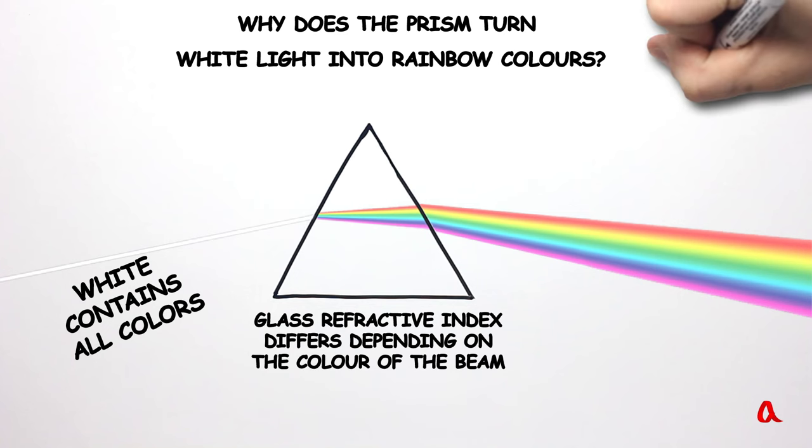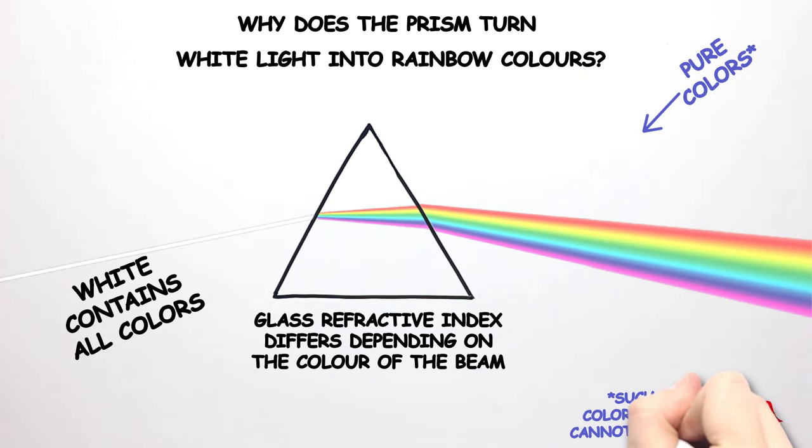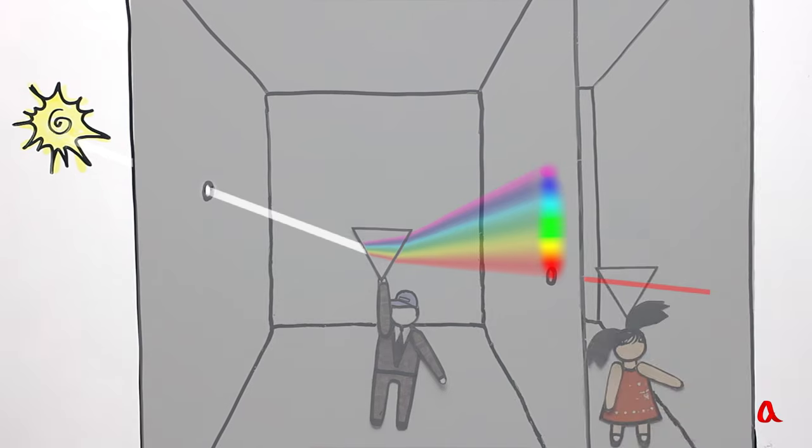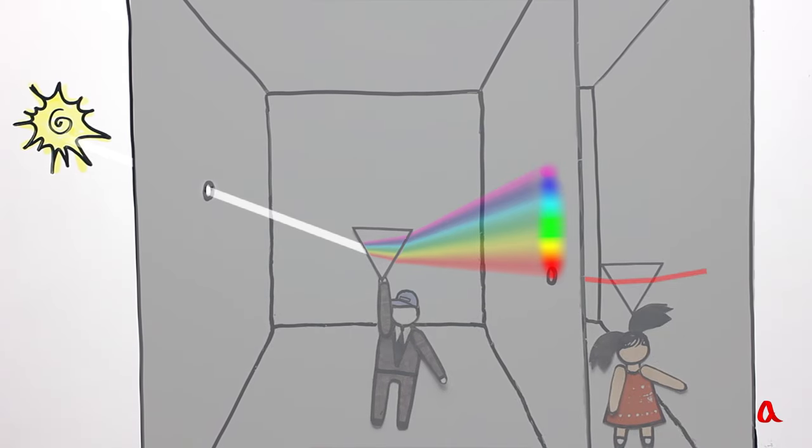Every separate color of the rainbow is pure and it cannot be split into different colors. Newton proved it in experiment separating a narrow beam from the whole spectrum and putting the second prism in its way which caused no more splitting.